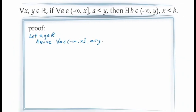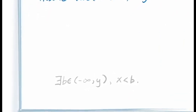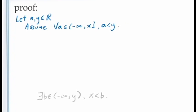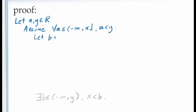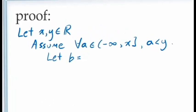Our job is then to demonstrate the consequent: there is at least one value of b in the open interval from negative infinity to y for which x is less than b. Since the statement we're trying to demonstrate includes an existential quantifier, we need to use the principle of existential generalization. This means if we want to prove there is a value of b satisfying this inequality, we need to give an example of a value of b that satisfies it — we need a line that says 'let b equal some specific value.'